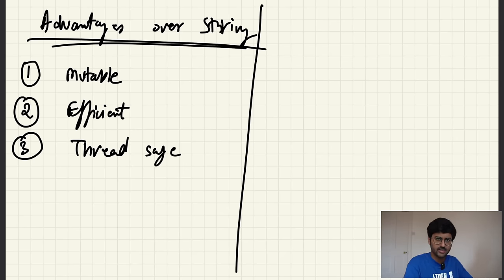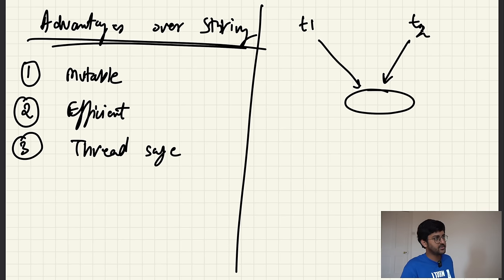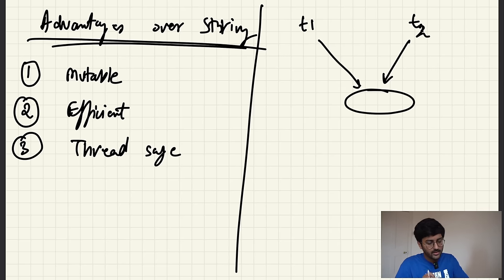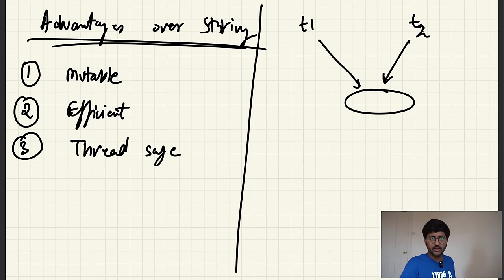Thread safety means: when thread number one is already working on some data, it is going to prevent any other thread from working on that data. Thread one says: 'Hey thread two, I am working on this data — please don't work with it right now, let me finish first.' That is thread safety in simple terms. If both threads don't care and both modify the data simultaneously, that is thread unsafety. StringBuffer is thread safe.